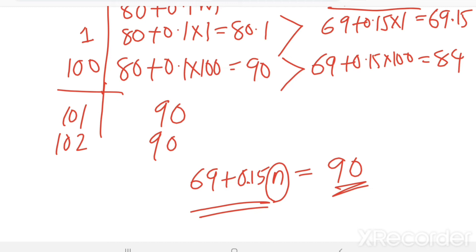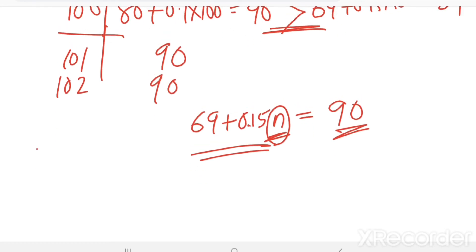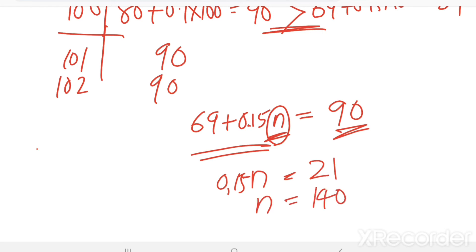Even after 100 days it was not equal, so we have to find when it becomes equal. We need to find the value of n. Here, 0.15n equals 90 minus 69, which is 21. Then n equals 140. So on the 140th day, the price of petrol will be equal to that of the price of diesel.